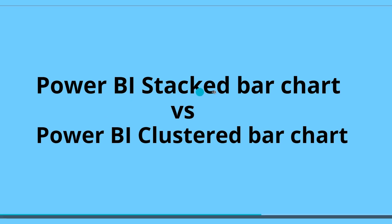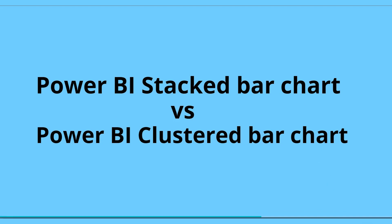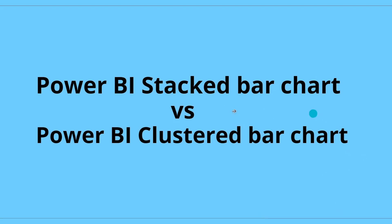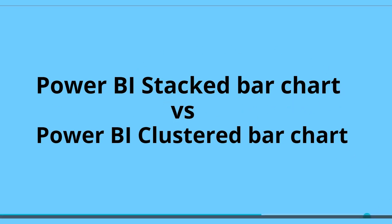The Power BI stacked bar chart is used to compare the totals and the values for the subcategories. In the stacked chart, we can only use the constant line — we are not able to display the minimum line, maximum line, or the average line in the stacked chart.